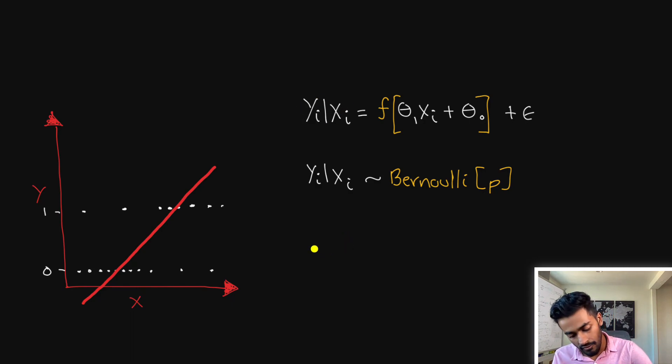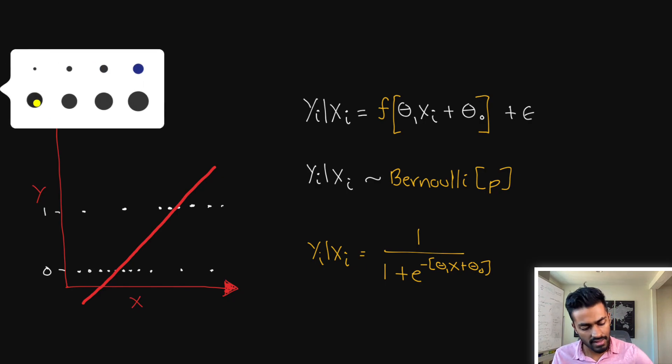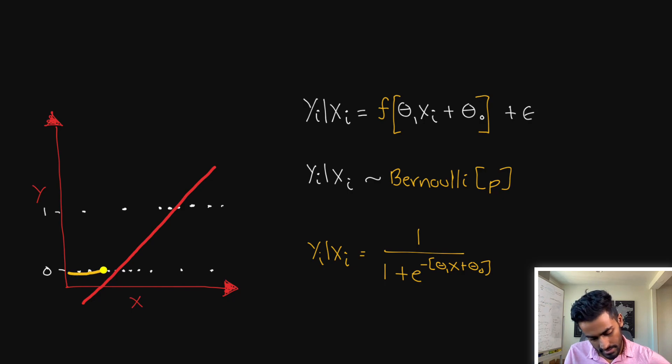And typically, for logistic regression, we find that a good squishification function is one over one plus e to the negative theta1x plus theta0. And this is specifically the sigmoid function that we see so often in logistic regression. And what that'll kind of look like is something like this. And this is a value that's going to effectively then lie between zero and one.